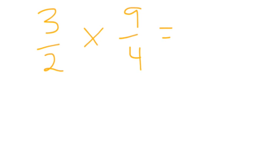Three times nine is 27, two times four is eight.